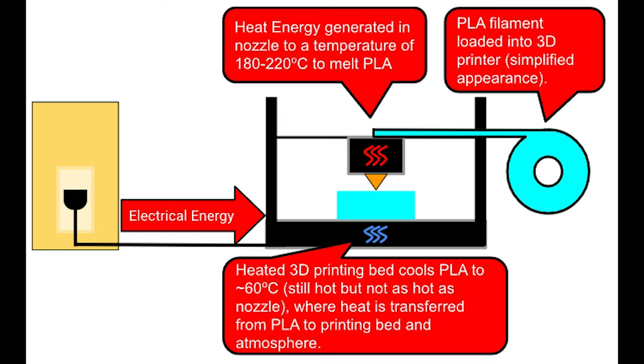In 3D printing, electrical energy is brought from a power source into the 3D printer, where this electrical energy is transferred mostly into heat energy, allowing for the 3D printing nozzle to reach the 180 to 220 degrees Celsius range that we need in order for the PLA to melt.